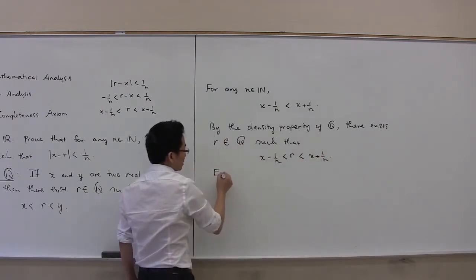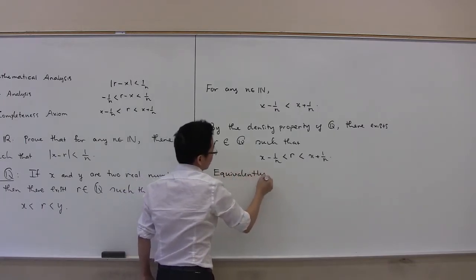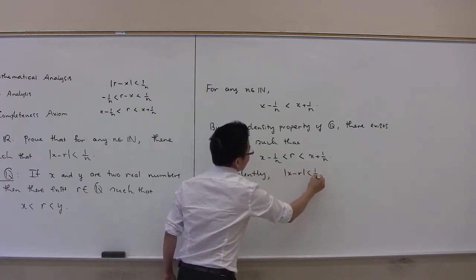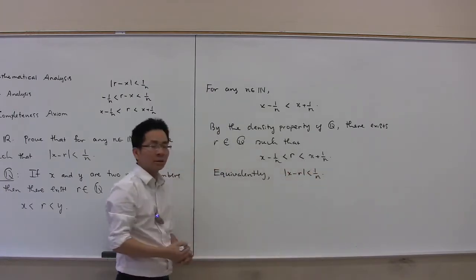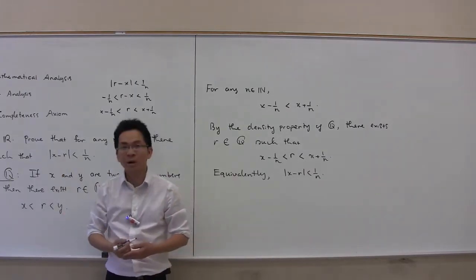Equivalently, the absolute value of x minus r is less than 1 over n. So we have completed the proof of the property given in problem 1.6.3.